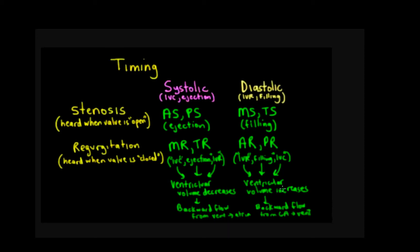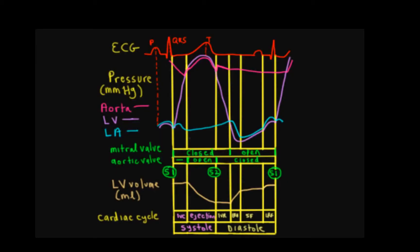One additional point: even though these murmurs are categorized under systolic and diastolic, mitral and tricuspid regurgitation are heard throughout most of systole and can even go into diastole — that pseudo isovolumetric relaxation phase. For aortic and pulmonic regurgitation, we hear those through most of diastole, and they can trickle into systole in that pseudo IVC phase.